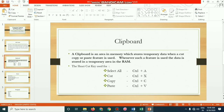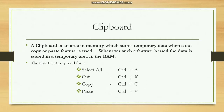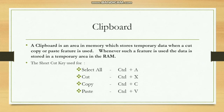Moving back to the PowerPoint presentation: a clipboard is an area in memory which stores temporary data when a cut, copy, or paste feature is used. Whenever such a feature is used, data is stored in a temporary area in RAM. To select all text in the document, press Ctrl+A simultaneously. Ctrl+C copies — no visible change appears, but the selected text is placed inside the clipboard. Then paste it in the desired area.